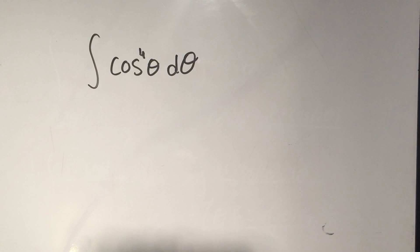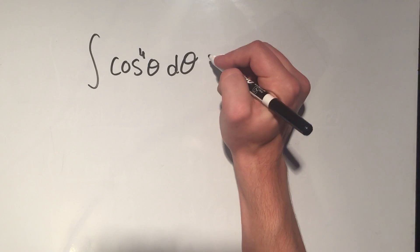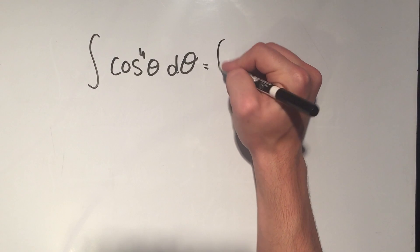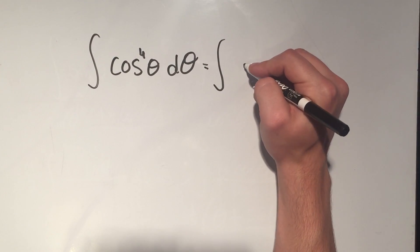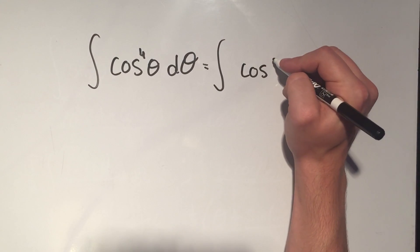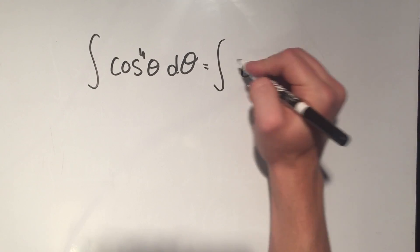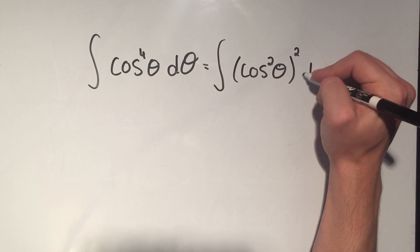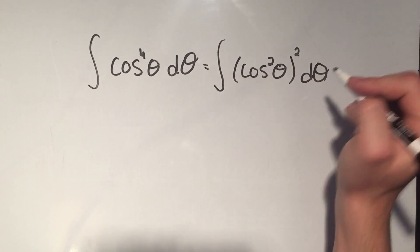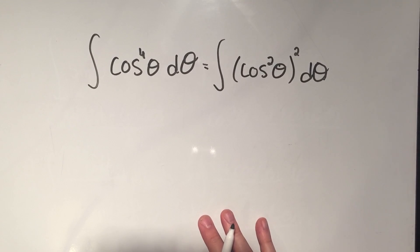Okay? Well, the trick here is that I'm going to use the same identity, but it's going to be squared. So if I write the fourth power as cosine squared squared, taking advantage of properties of exponents.